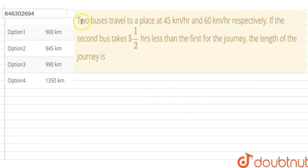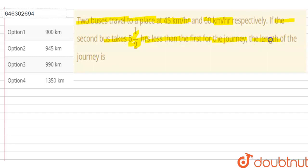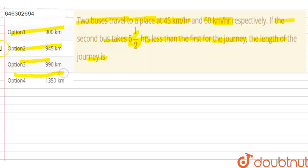In this question, two buses travel to a place at given speeds. The first bus speed and the second bus speed are provided. If the second bus takes five and a half hours less than the first for the journey, we have to find the length of the journey. We have four options for the distance.